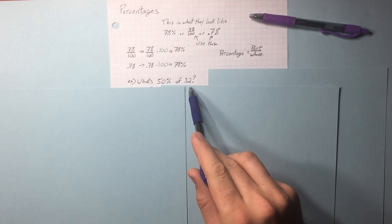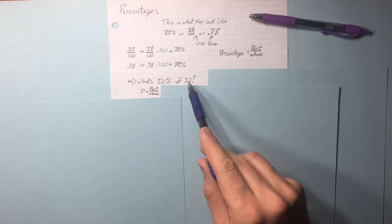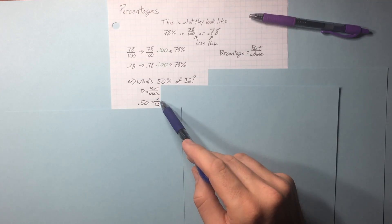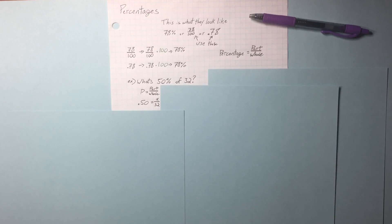Percentage equals part over whole. What's 50% of 32? Plug in what we know. We know the percentage and we know the whole, so that leaves the part to be x. Multiply each side by 32. x equals 16.